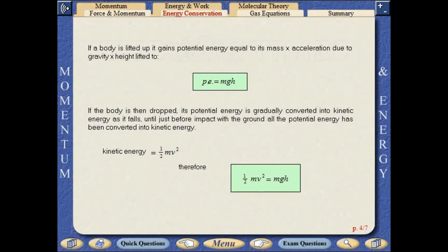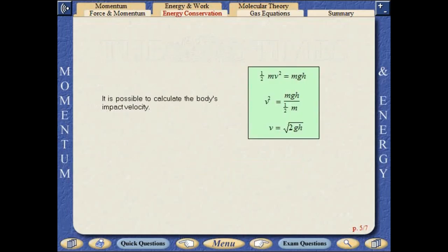If the body is then dropped, its potential energy is gradually converted into kinetic energy as it falls, until just before impact with the ground, all the potential energy has been converted into kinetic energy. It is possible to calculate the body's impact velocity. Study the methods shown.